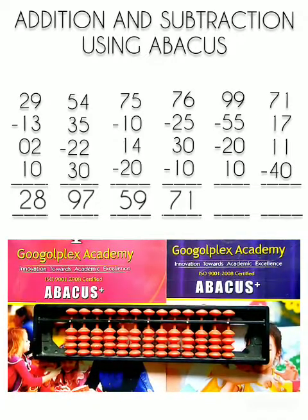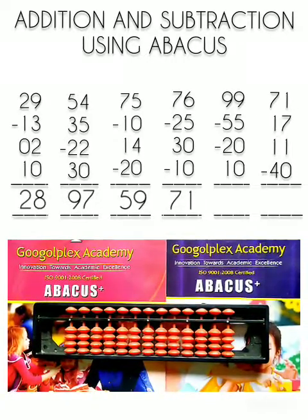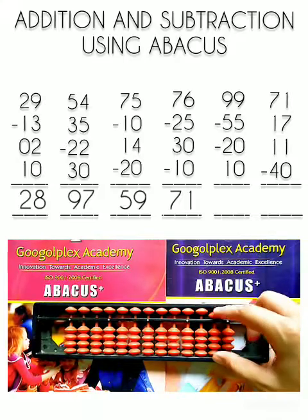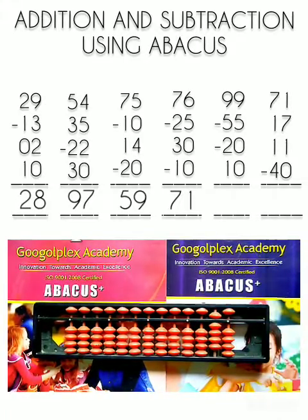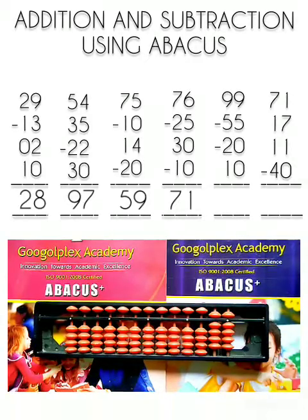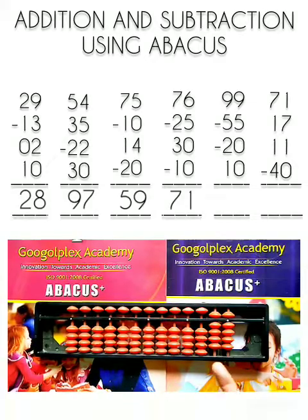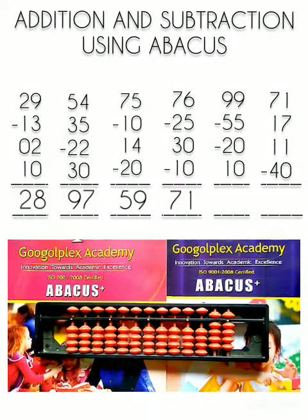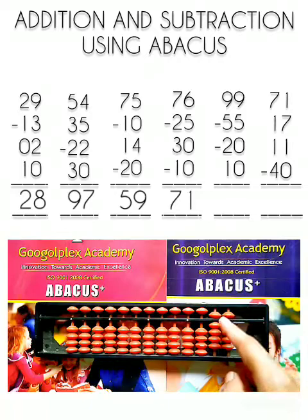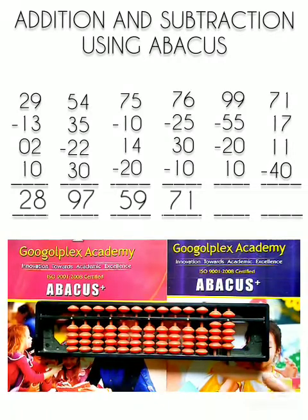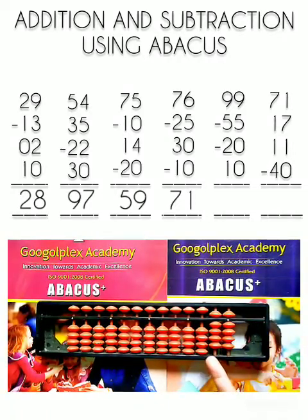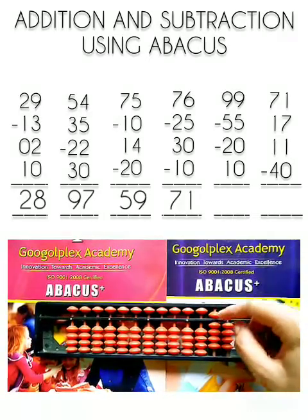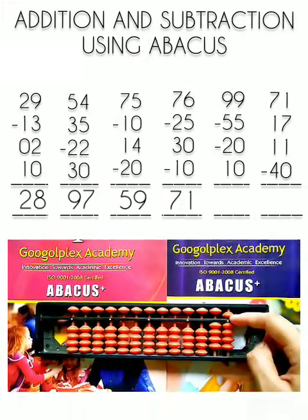Now question number 5. First number is 99. 50 plus 40, this is 90. And for 9, this is 5 plus 4, 9. Now we have to subtract 55 from this number. For 55, we have to subtract the upper bead of the 10's rod and upper bead of the 1's rod. Minus 50, minus 5.